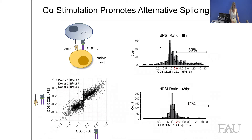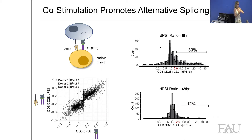In terms of how many splicing events go all-or-none: for the most part, these changing events never go completely one way or the other. They tend to be in the 20 to 80 percent mid-range, so you're seeing shifts in the balance rather than binary switches. You'll see some examples of that as we go on.